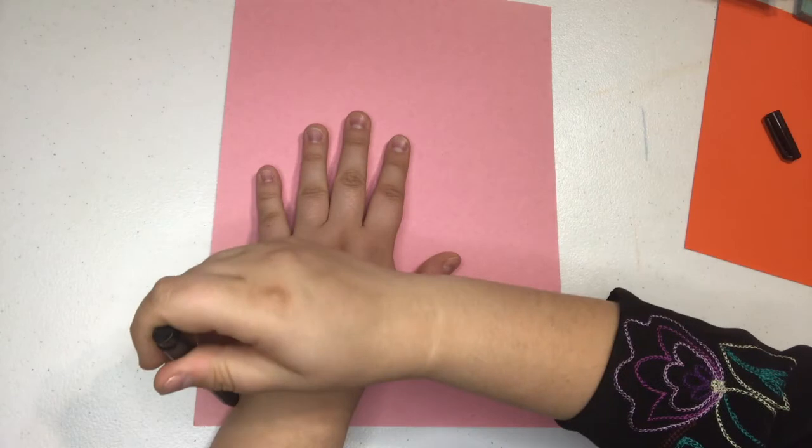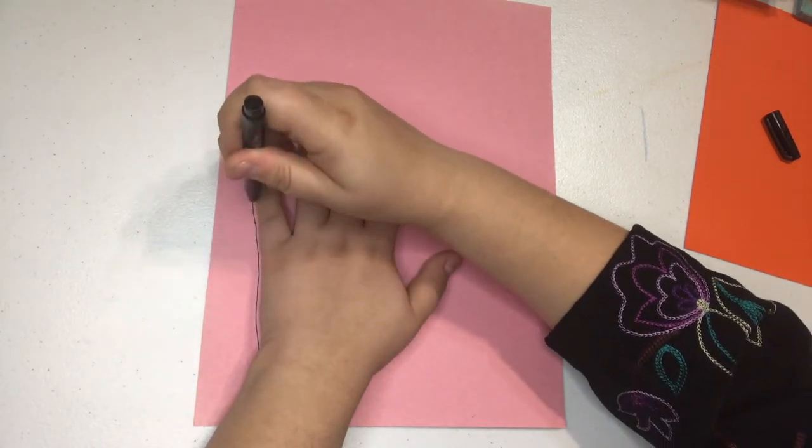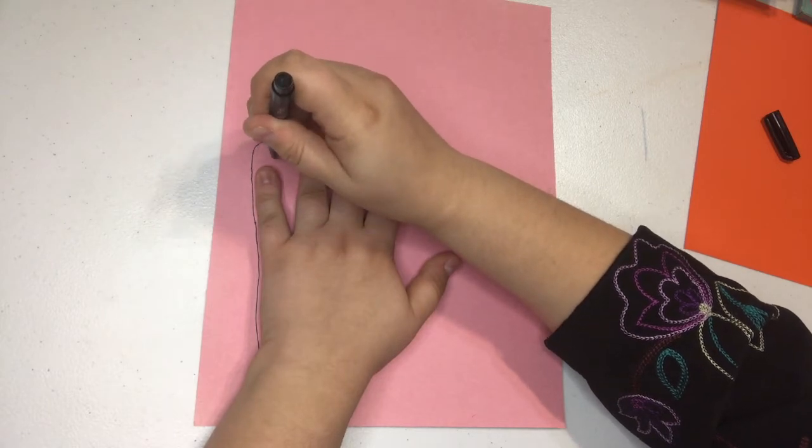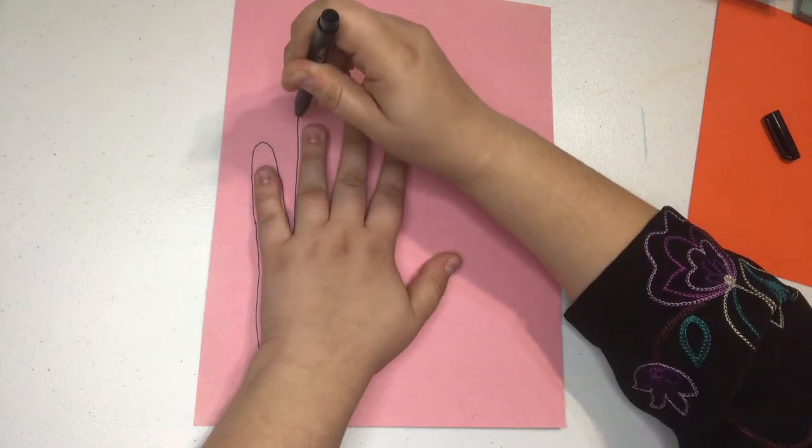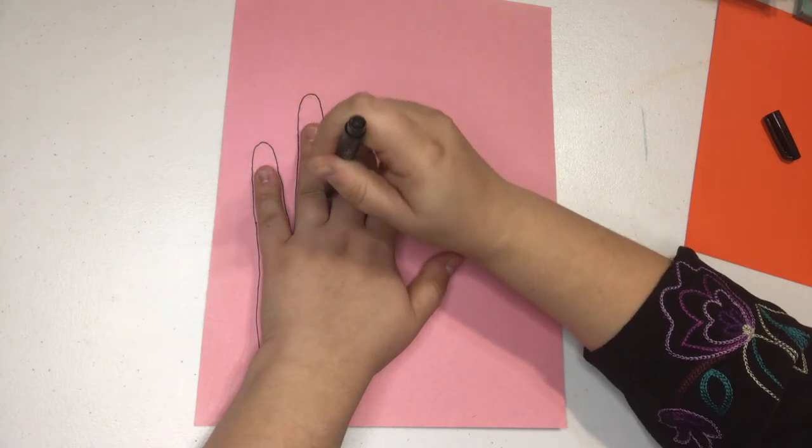If it's to the side either way, it's going to make your hand bigger or smaller than it actually is in real life. So I'm going to keep it up and down and I'm going to extend my fingers just a little bit longer and try to keep the amount that I extend about the same for each of my fingers.